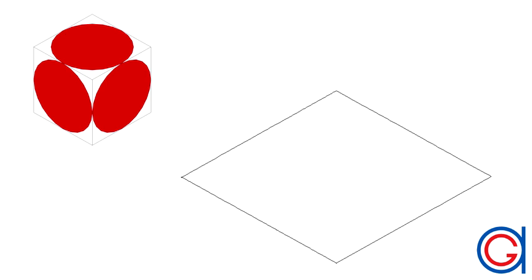If we draw a circle in each face of this cube and set it to isometric view, the circles appear as ellipses, which are called isometric ellipses.